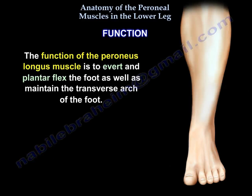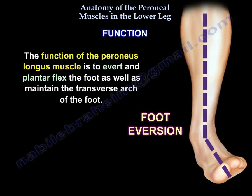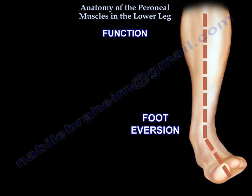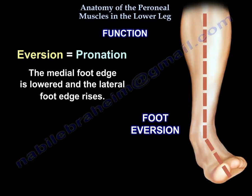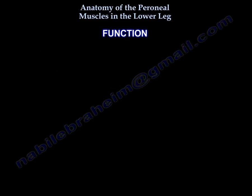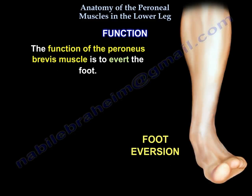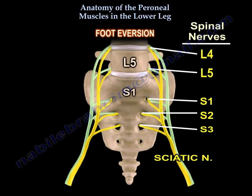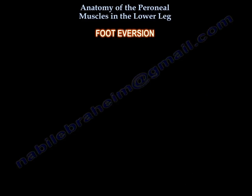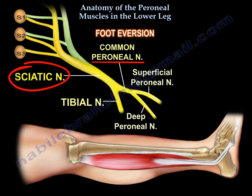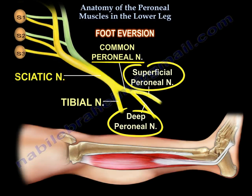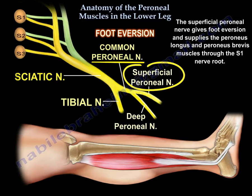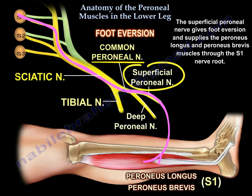Function: the perineus longus muscle is to evert and plantar flex the foot, as well as maintain the transverse arch of the foot. Eversion means pronation — the medial foot edge is lowered and the lateral foot edge rises. The function of the perineus brevis muscle is to evert the foot. The sciatic nerve splits into two components: common peroneal and tibial nerve. The common peroneal gives two branches: the superficial peroneal and the deep peroneal. It is the superficial peroneal nerve that gives foot eversion, supplying the perineus longus and perineus brevis through the S1 nerve root.